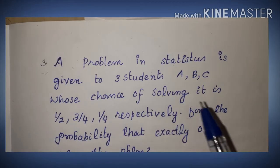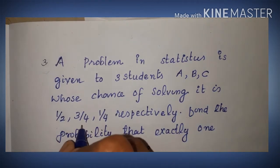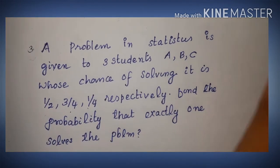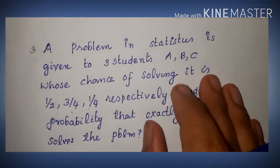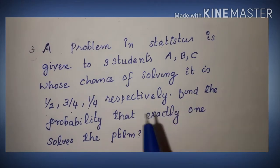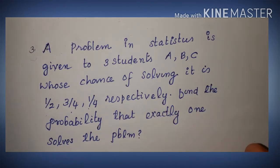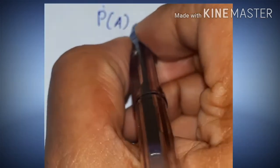Three students A, B, C. Their probabilities of solving the problem are: A is 1 by 2, B is 1 by 4, C is 3 by 4. We need to find the probability that exactly one student solves the problem. Exactly one of the three students A, B, C solves the problem.